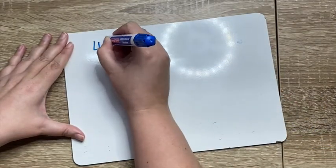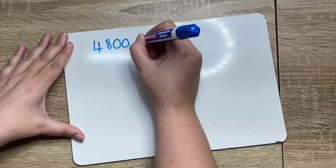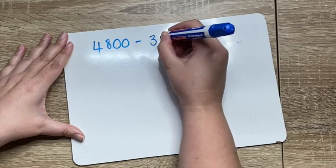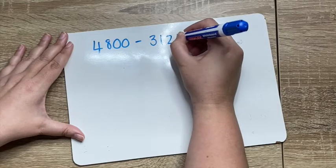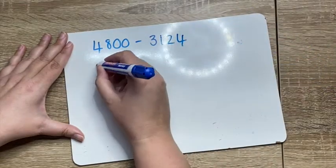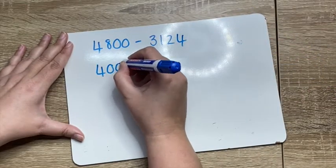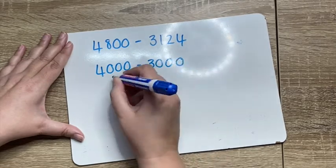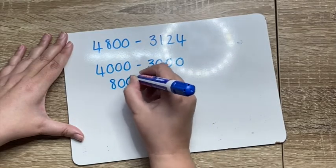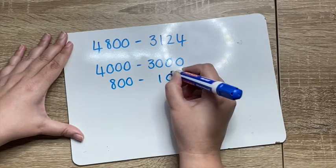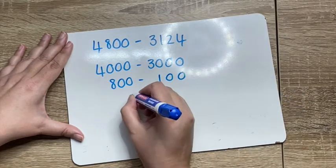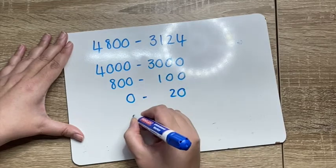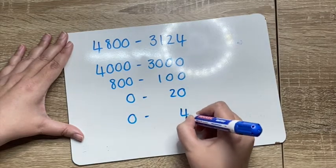So let's say we have the number 4,800 minus 3,124. So we break it up like we usually do. We have 4,000 minus 3,000, 800 minus 100, 0 minus 20, and 0 minus 4.